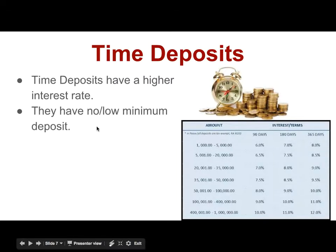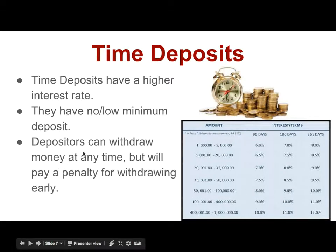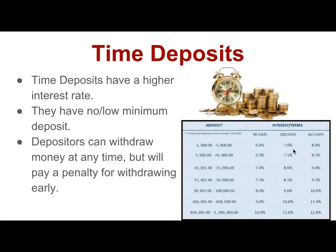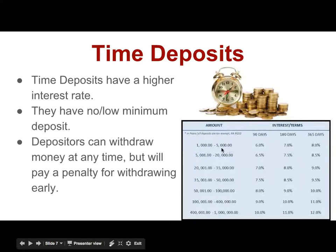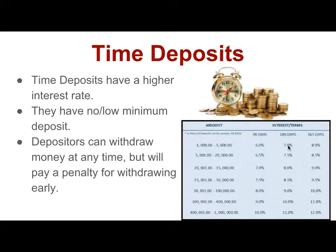CDs do have minimum deposits — this spreadsheet suggests $1,000, but there are certainly CDs you can get for less. Depositors can withdraw money at any time, but you're going to pay a penalty for withdrawing early. So if you buy a $5,000 CD for 180 days at 6 months, you'll earn 7% interest on that. But if you need to withdraw before the 180 days, you'll get the original $5,000 back but you're not going to get the interest — you'll lose it. That's a pretty huge penalty, so you really do not want to withdraw from a CD early. Make sure the money you're putting in can stay for the entire duration.